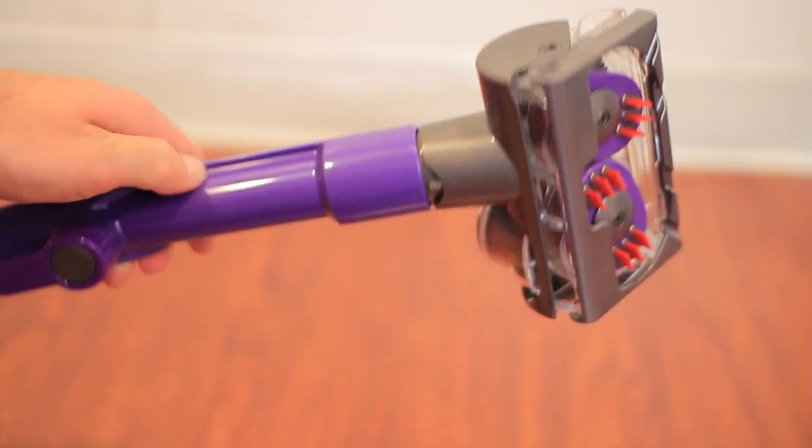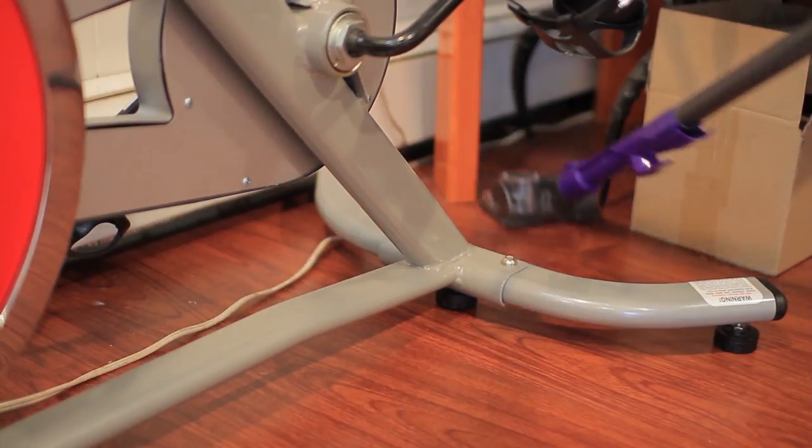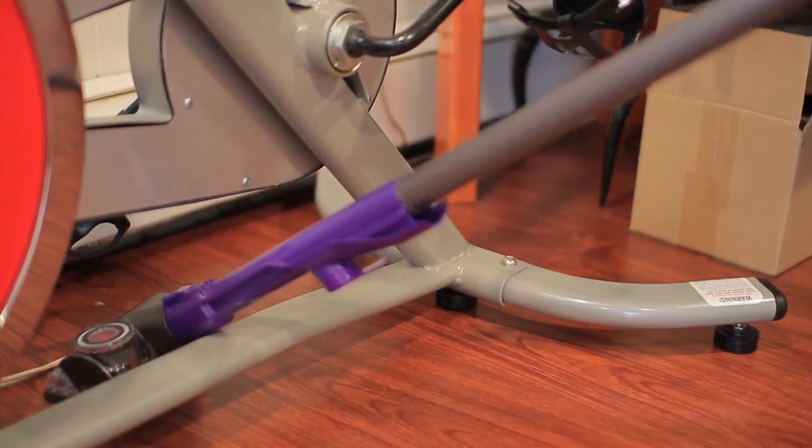This is a tangle-free turbine tool, which can also be used to remove pet hair from carpets and upholstery without tangling.